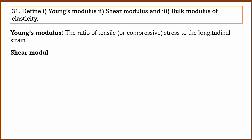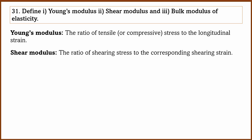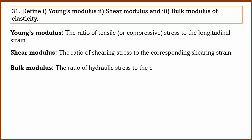Shear modulus is also a ratio. It is the ratio of shearing stress to the corresponding shearing strain. Bulk modulus is the ratio of hydraulic stress to the corresponding hydraulic strain. So all moduli are stress divided by strain — Young's modulus is tensile/compressive stress by longitudinal strain, shear modulus is shearing stress by shearing strain, and bulk modulus is hydraulic stress by hydraulic strain. This is the difference between them.